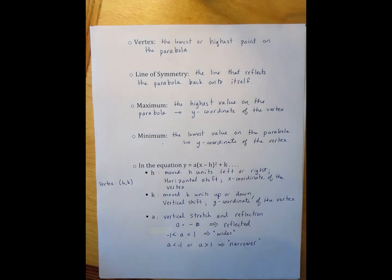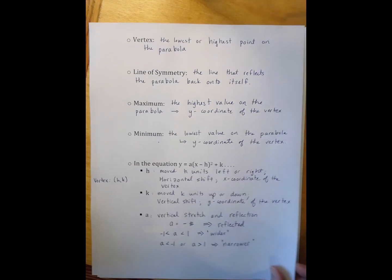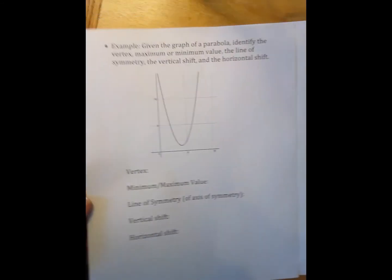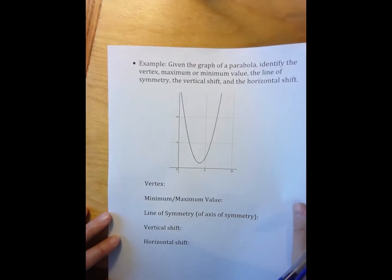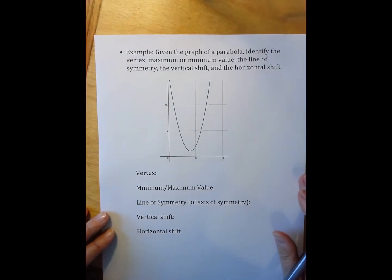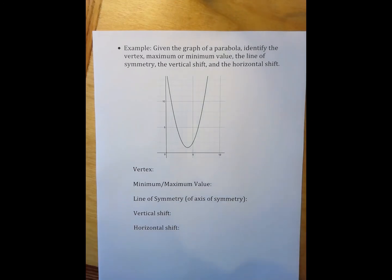Now, let's actually do an example with all of this, because this is a lot of information that I can get from my parabola. So we're going to look at one example here where we are given the graph of a parabola and we're asked to identify the vertex, whether or not it is a maximum or minimum value and what is it, the line of symmetry.